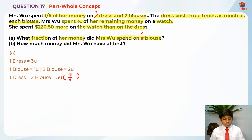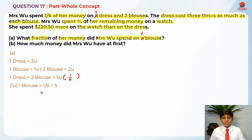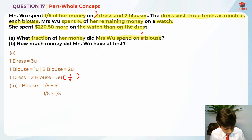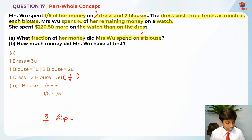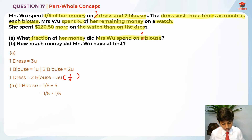Since five units equals one sixth, to find the fraction for one blouse (one unit), we calculate one sixth divided by five. Using keep-change-flip: keep one sixth, change divide to multiply, and flip five to one fifth. One sixth times one fifth gives us one thirtieth. So the answer for Part A is one over 30.